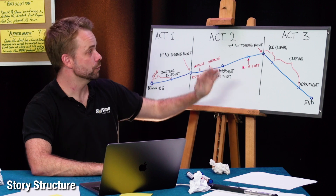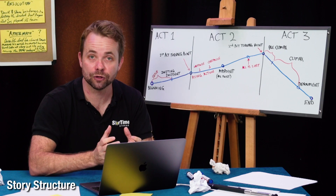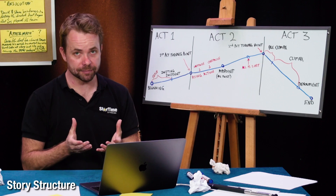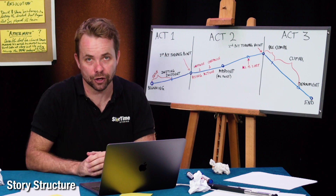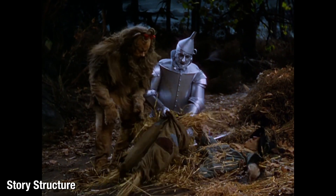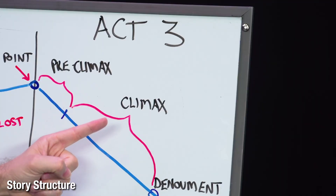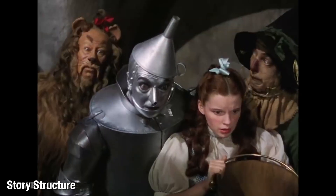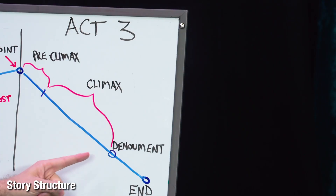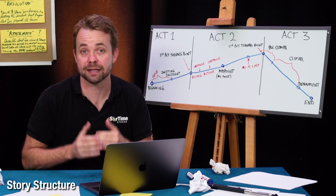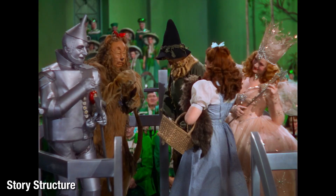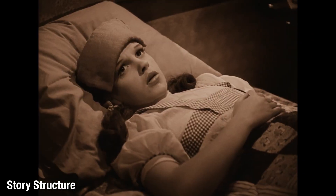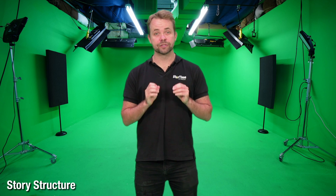Which brings us to the third and final act. This aims to resolve the story to a satisfying conclusion. Starting with the pre-climax, where your characters pick themselves up from their low point and create a new plan to reach their goal. Dorothy's friends plan to save her from the witch. This is followed by the climax, where our characters will face their enemies externally or internally and learn the lessons they need to learn. And finally, we see the denouement — which is just a fancy French word that means the emotional resolution to the film. Characters get what they need and life returns to normal.